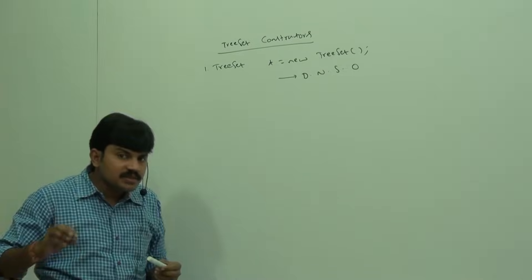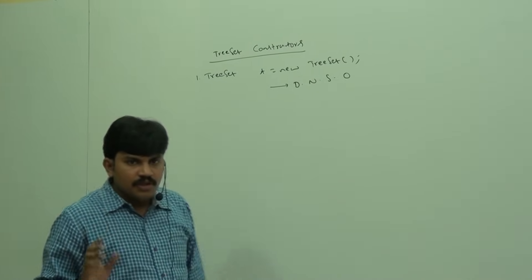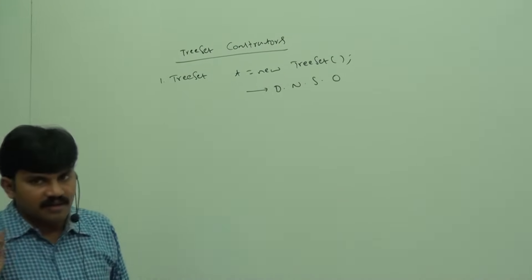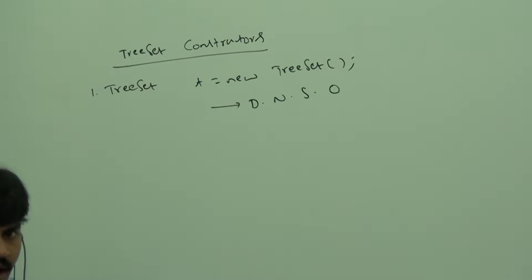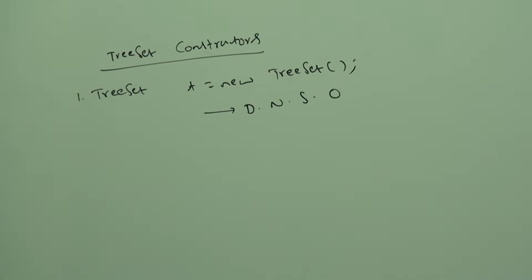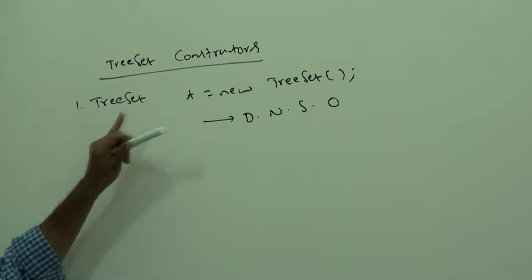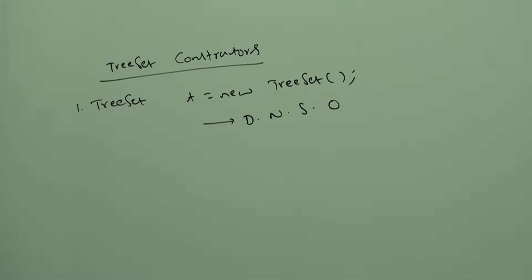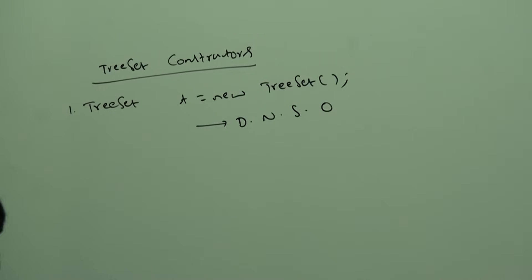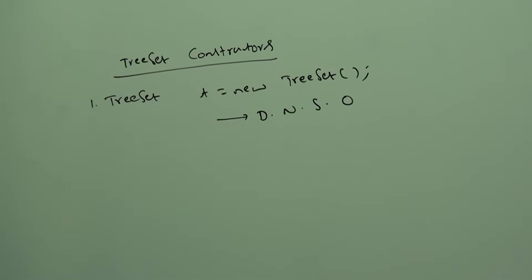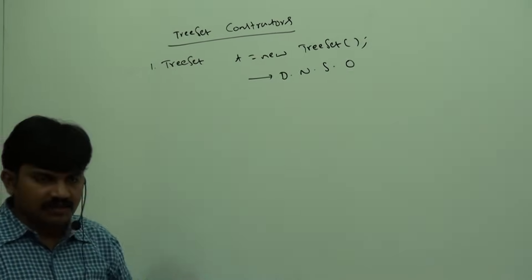What is default natural sorting order? If it is a number, ascending order. If it is a String, alphabetical order. So if you want all objects inserted according to default natural sorting order, use this first constructor.